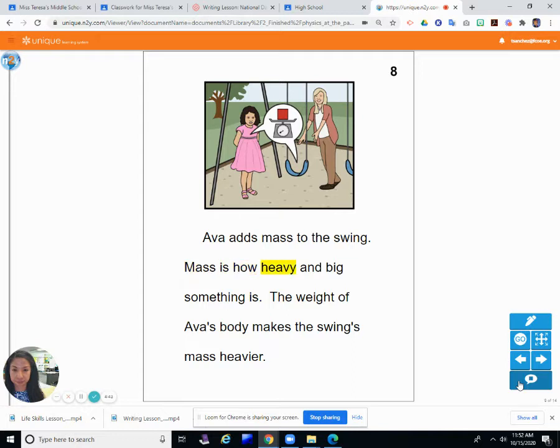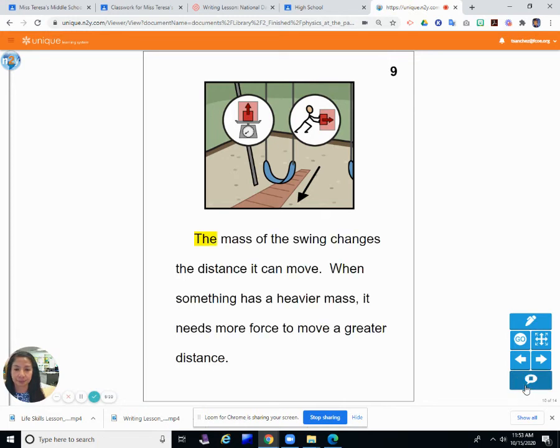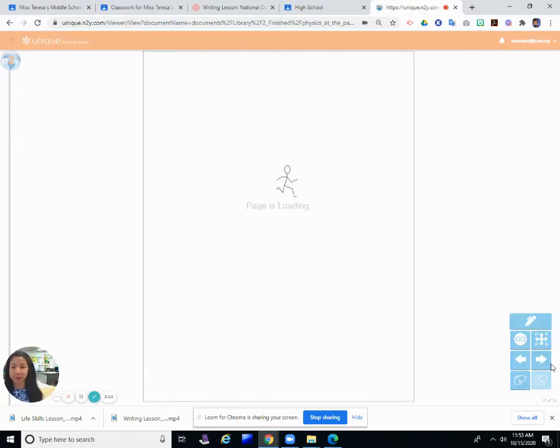Ava adds mass to the swing. Mass is how heavy and big something is. The weight of Ava's body makes the swing's mass heavier. So she adds mass by sitting on it because she's probably a little heavier than the swing. So something heavier, a heavier object maybe takes more force to push and a lighter object takes less force to push further. The mass of the swing changes the distance it can move. When something has a heavier mass, it needs more force to move a greater distance. Which is what I just said. Heavier things need more force.